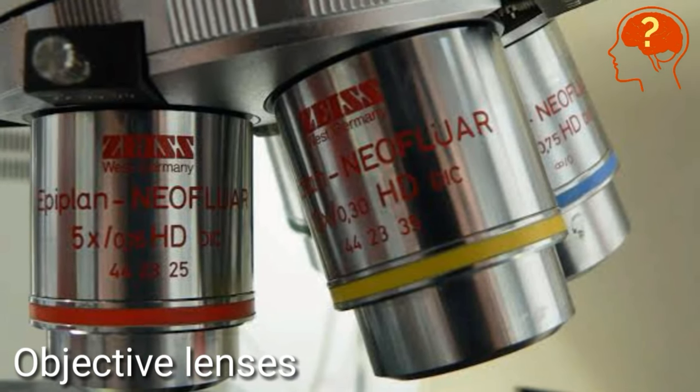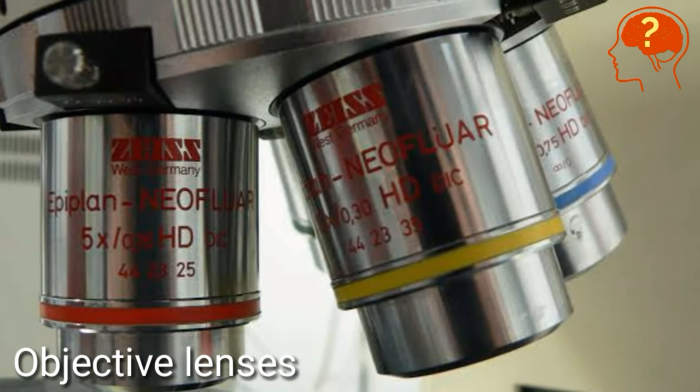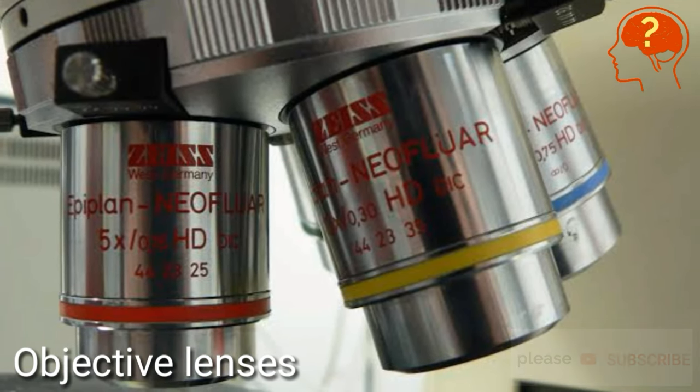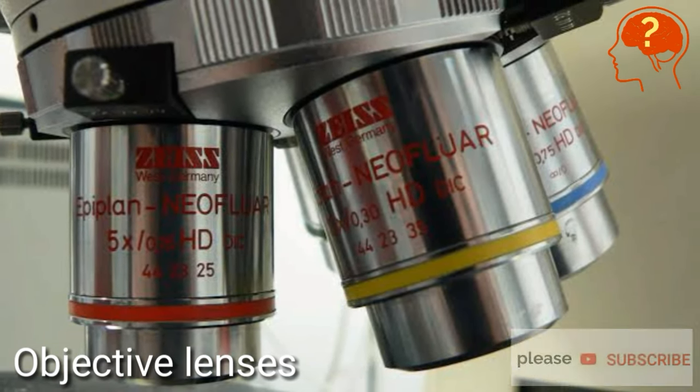You should start with 5x, then 10x, and then move towards 40x, the larger one. You can rotate the nose piece and adjust it.